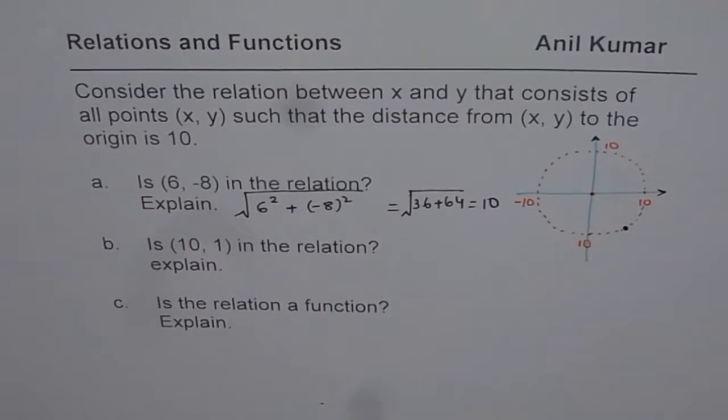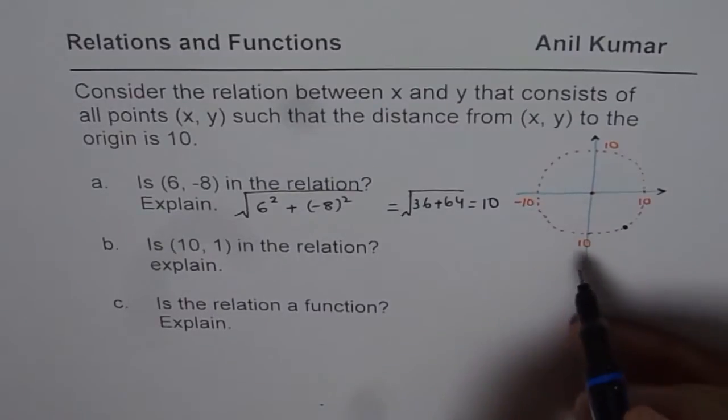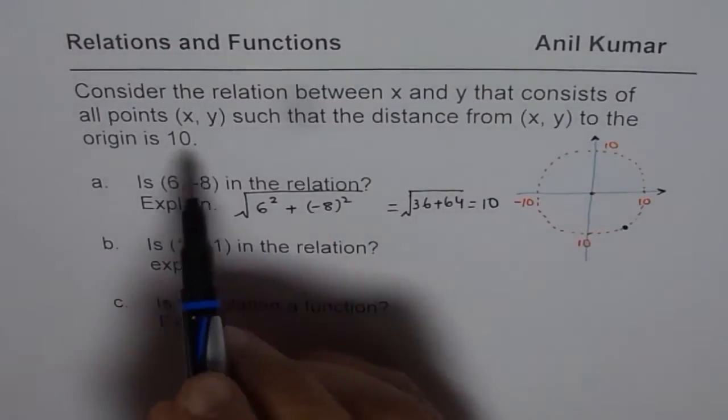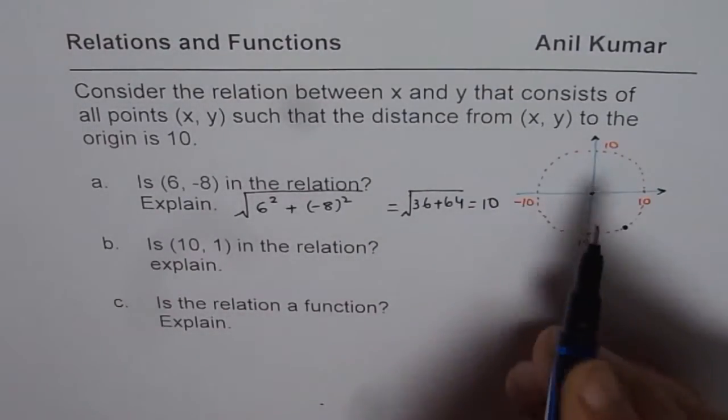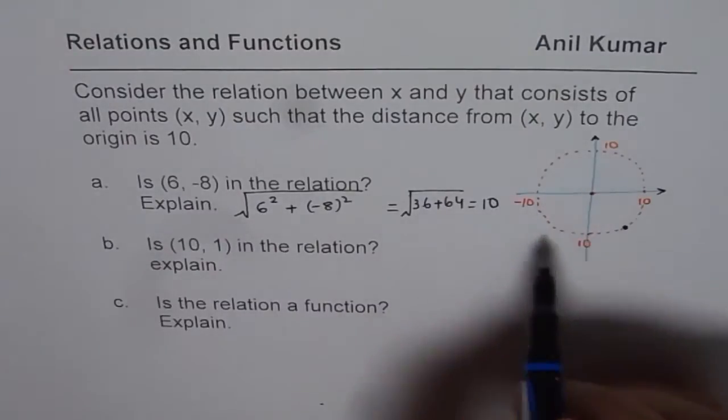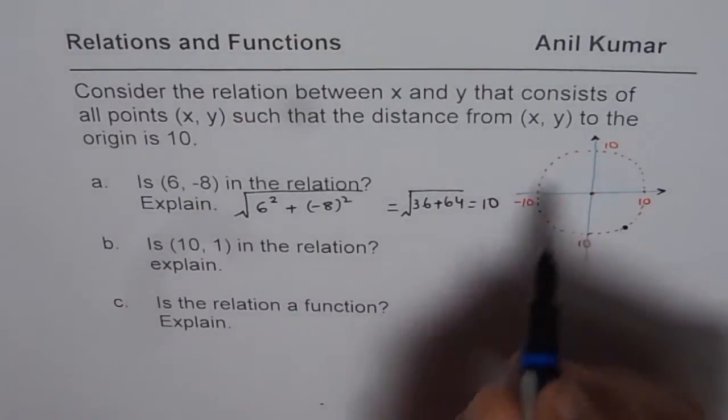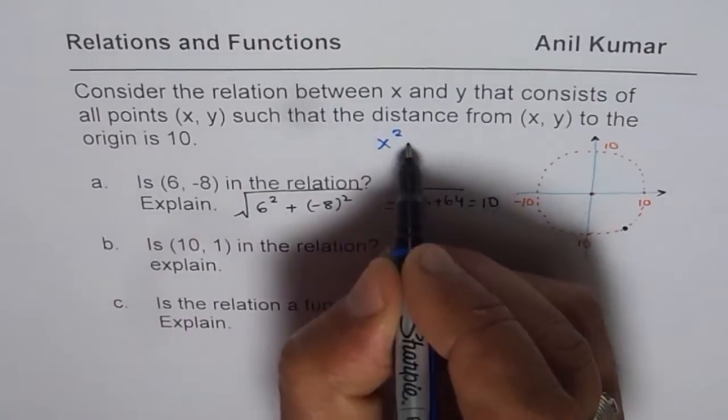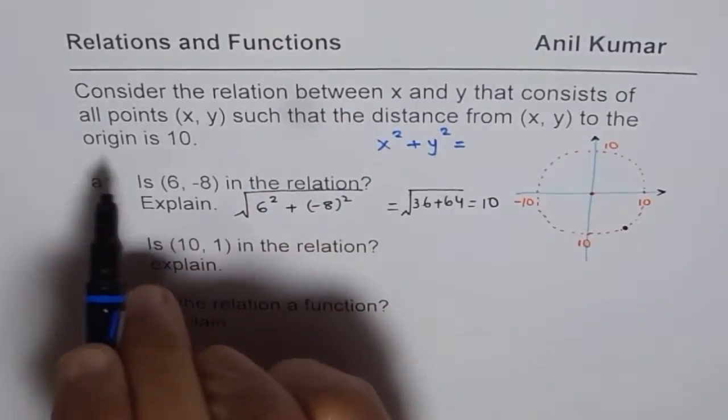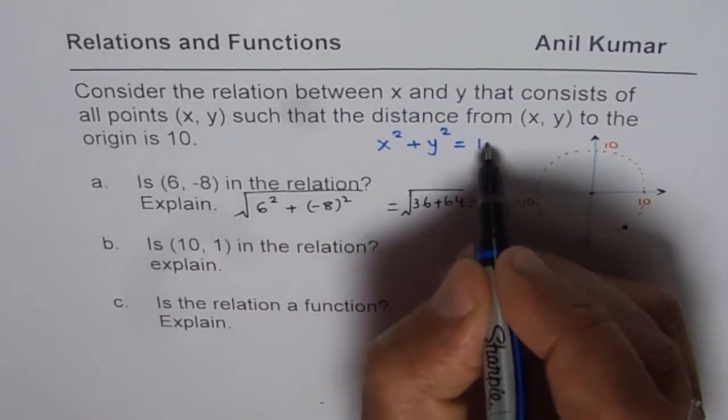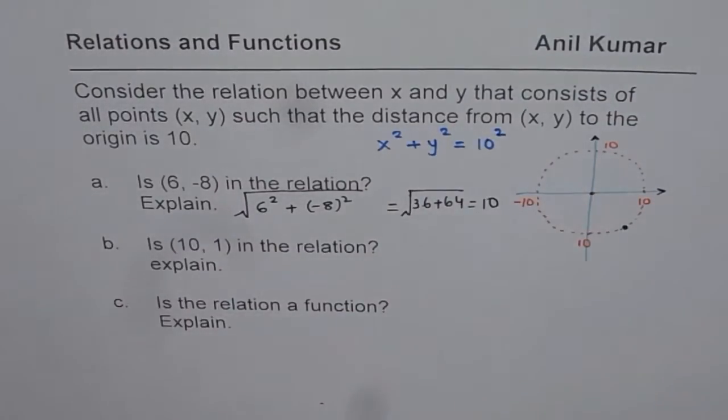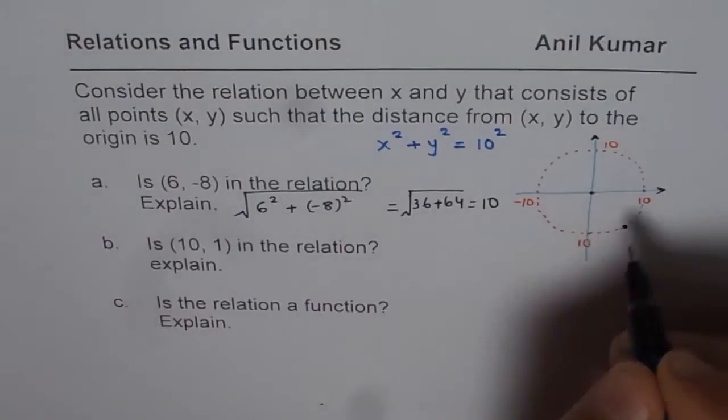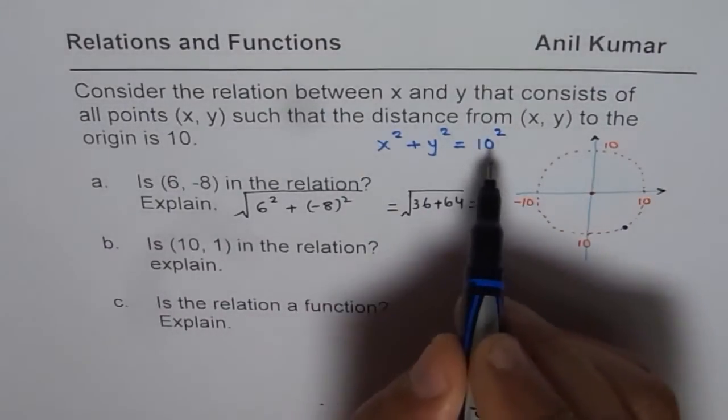The other approach could be, since you found that the set of points which form the relation is the one which makes a circle, then the relation is x² + y² = 10². The distance from the origin is 10, so radius is 10 for the circle. Since the radius is 10, we could use this relation also.